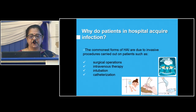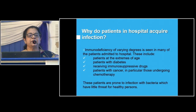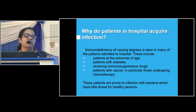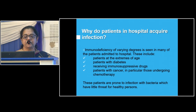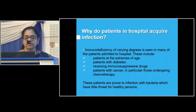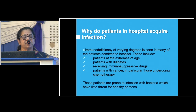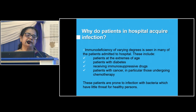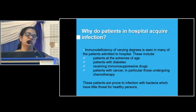The commonest forms of hospital acquired infections include surgical operations, intravenous therapy, intubation, and catheterization. We normally walk around but won't acquire infections — only patients acquire them because we are performing invasive procedures on them with drug-resistant microorganisms. Patients with extremes of age have less immunity; patients with diabetes are immunosuppressed; those on immunosuppressive drugs and patients with cancer are also at risk. Hematology ward and oncology patients are most prone to hospital acquired infection and should be taken care of in an extreme manner. When sending patients home, we should not send them with multiple infections.